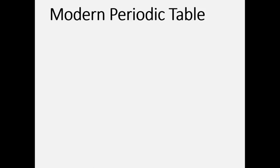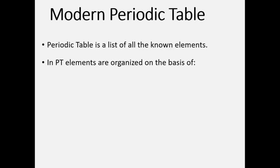Hi dear student, today our topic is modern periodic table. Periodic table is a list of all known elements. In periodic table, elements are organized on the basis of atomic number and chemical property. In simple words, the periodic table is a sketch of elements organized by two things: atomic number and chemical property.